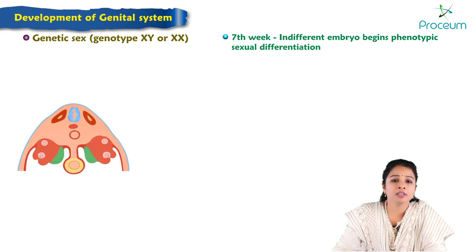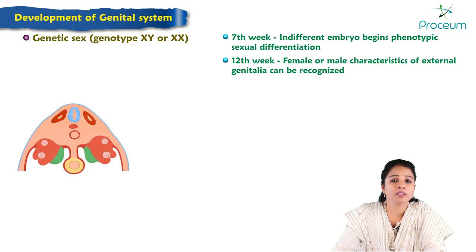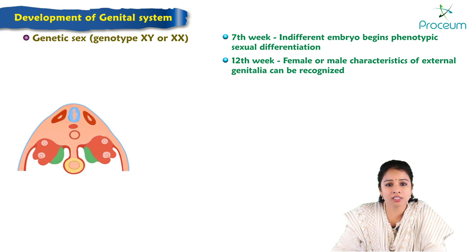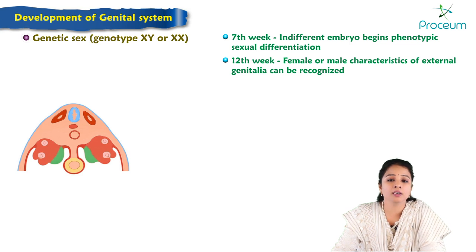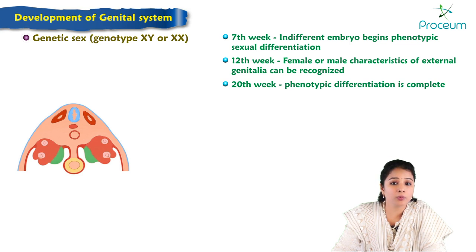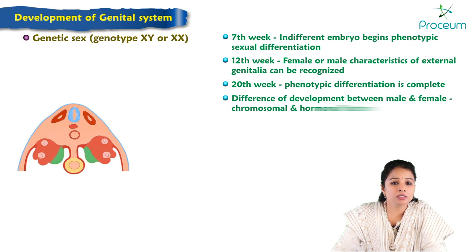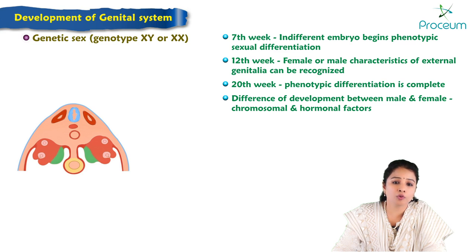During week 7 the indifferent embryo begins phenotypic sexual differentiation. By week 12, the female or male characteristics of external genitalia can be recognized, and by week 20 the phenotypic differentiation is complete. This difference in development between male and female is due to chromosomal and hormonal factors.